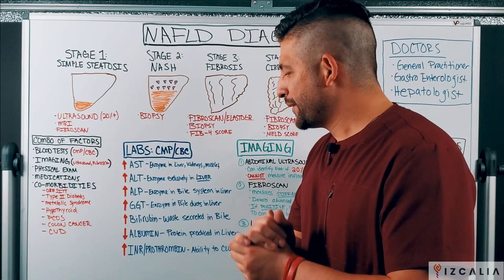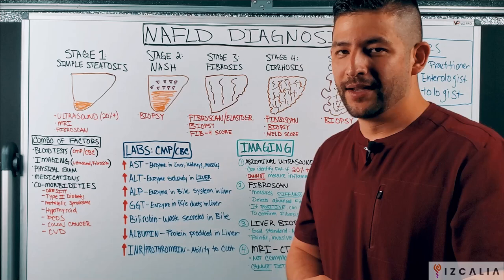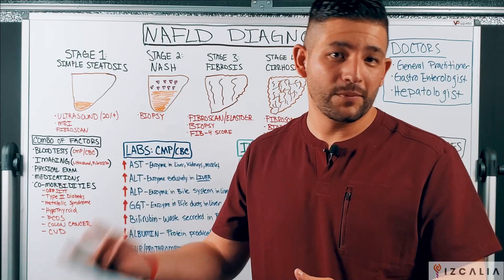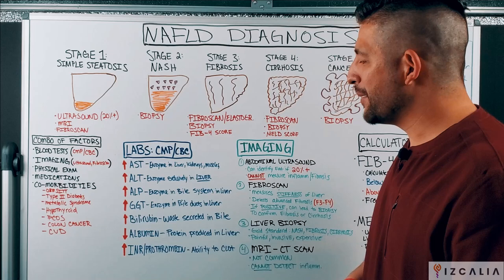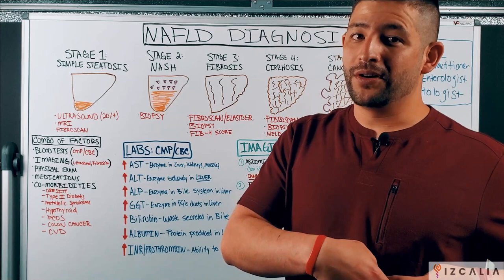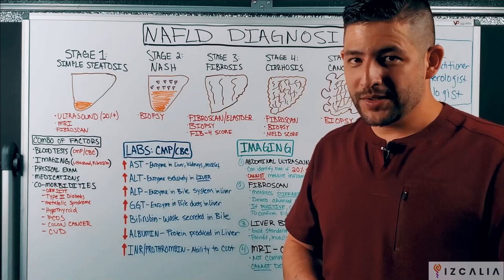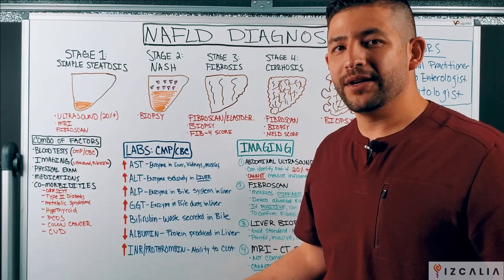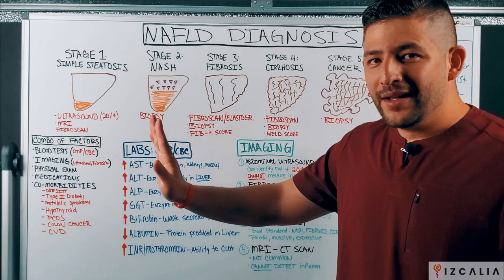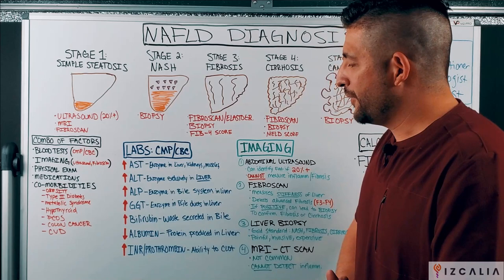The next one is bilirubin, which is a waste product — a metabolite — secreted when red blood cells degrade and break down. Your liver is responsible for getting rid of that excess waste through bile, which gets secreted into your gallbladder, then into your small intestine and large intestine, and you excrete it through your feces. When you get elevated amounts of bilirubin in your bloodstream, that means your liver isn't getting rid of it, usually indicating some kind of dysfunction in the bile system — another indicator of liver disease.